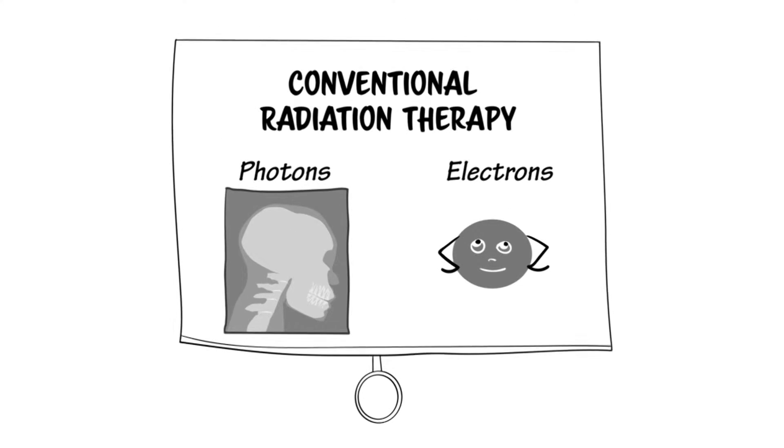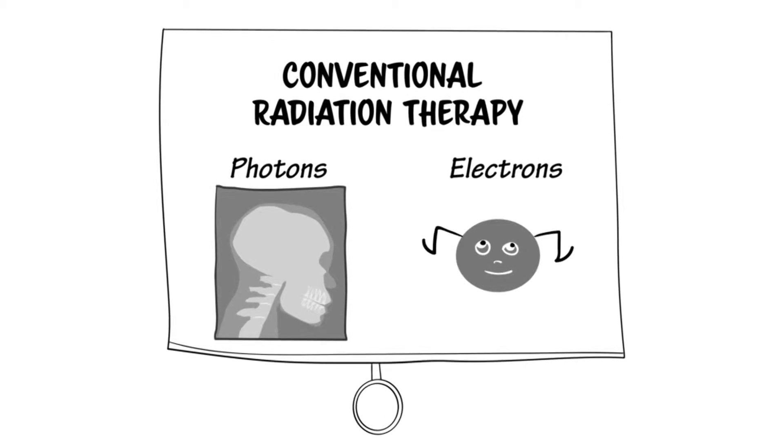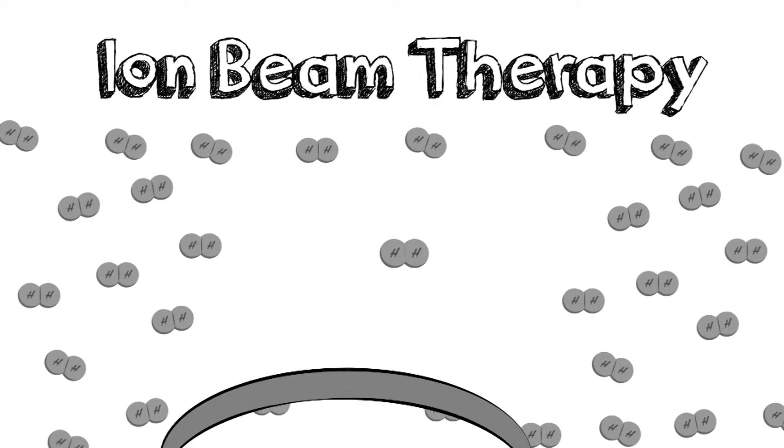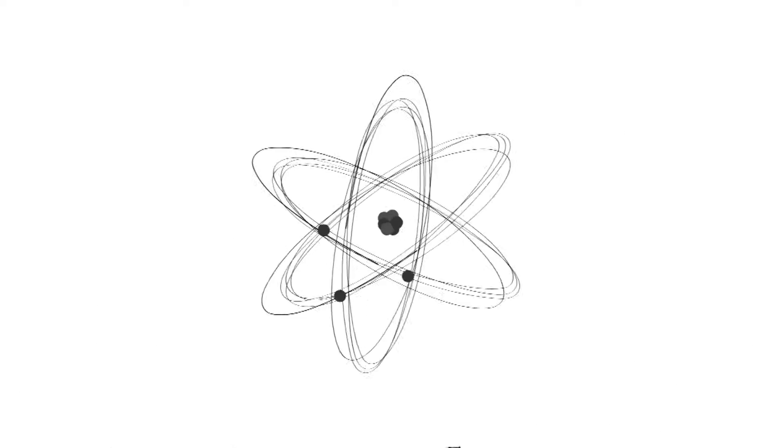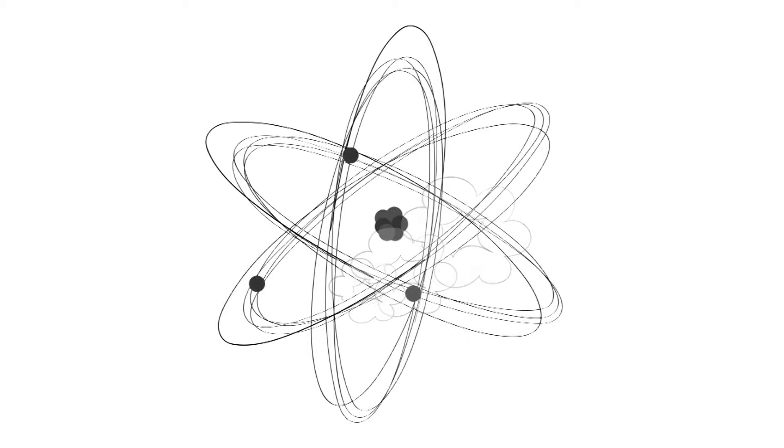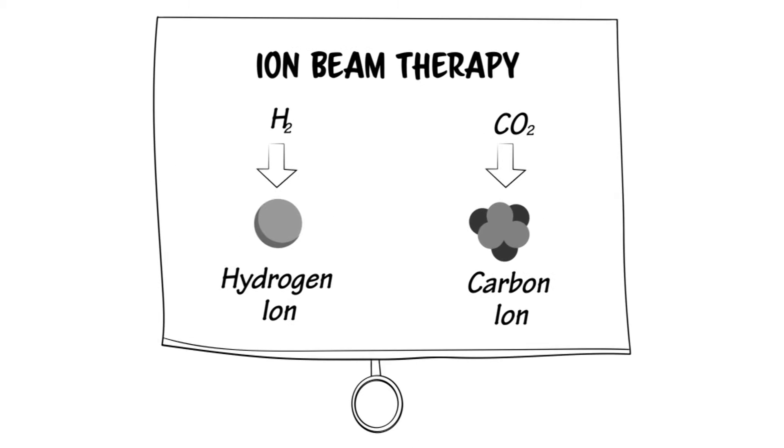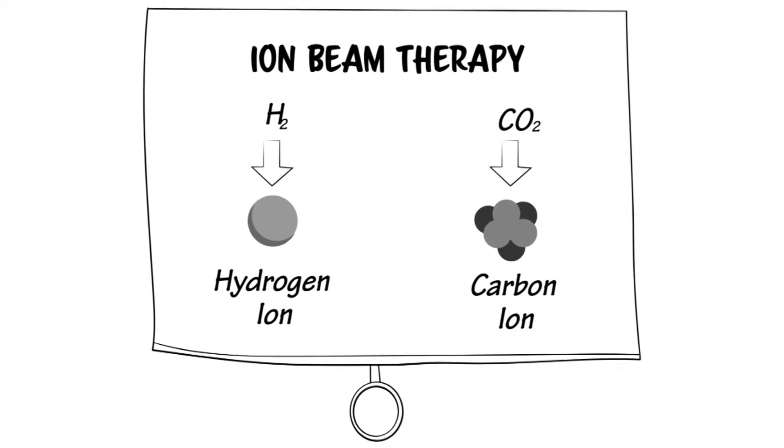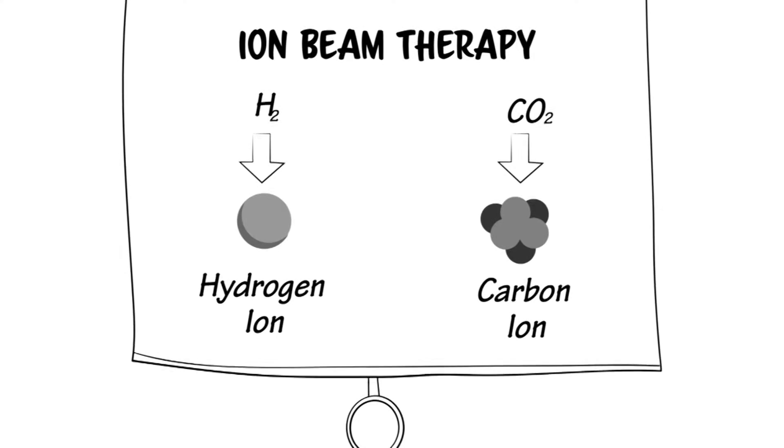Conventional radiation therapy works with photons like x-rays and electrons. Ion beam therapy, also known as particle therapy, uses, as implied in the name, ions. These are electrically charged atoms of which all solid, liquid, or gaseous elements are made. For ion beam therapy, protons and carbon ions are used. They are positively charged hydrogen and carbon atoms.